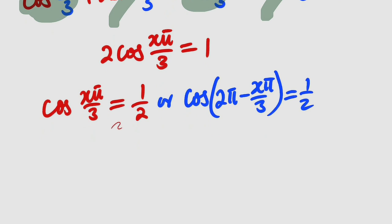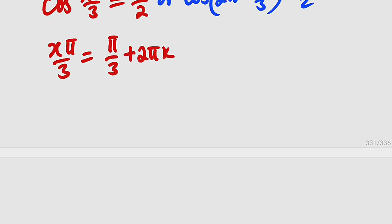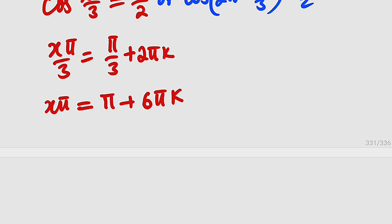Starting with the first equation: we know cosine of pi over 3 equals 1 over 2. Taking the cosine inverse of both sides, x pi over 3 equals pi over 3. Since cosine is periodic with period 2 pi, we add multiples of 2 pi: x pi over 3 equals pi over 3 plus 2 pi k, where k is an integer. Multiplying every term by 3 gives x pi equals pi plus 6 pi k. Dividing by pi, we get x equals 1 plus 6k.